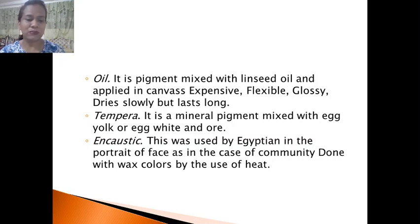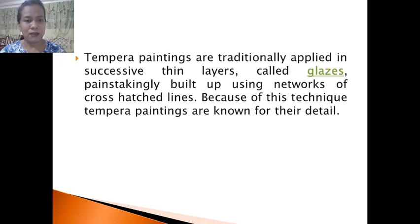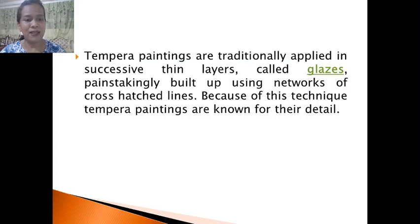Encaustic is done with wax colors using heat. Tempera paintings are traditionally applied in successive thin layers called glazes, painstakingly built up using networks of cross-hatched lines. Because of this technique, tempera paintings are known for their detail.